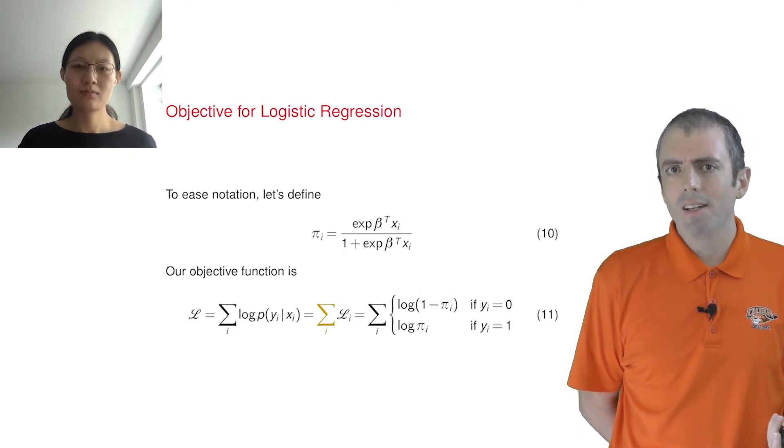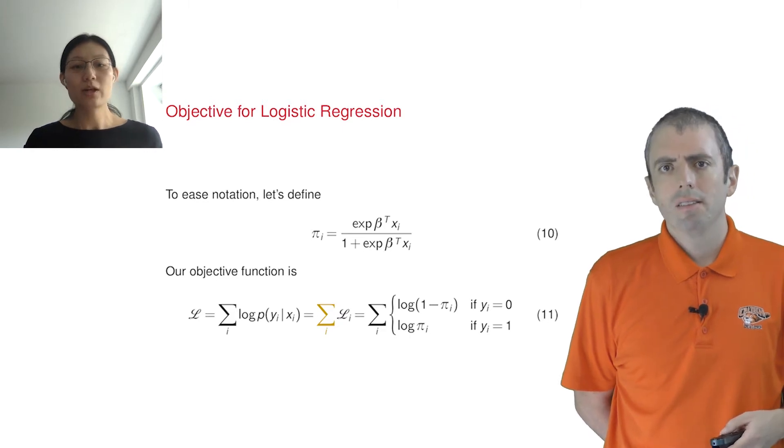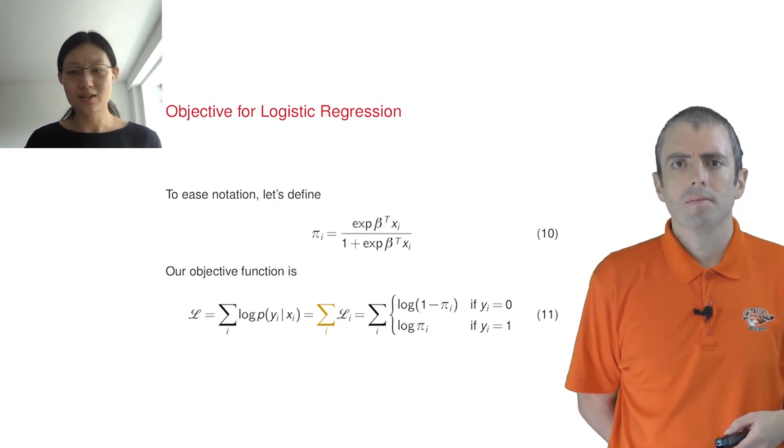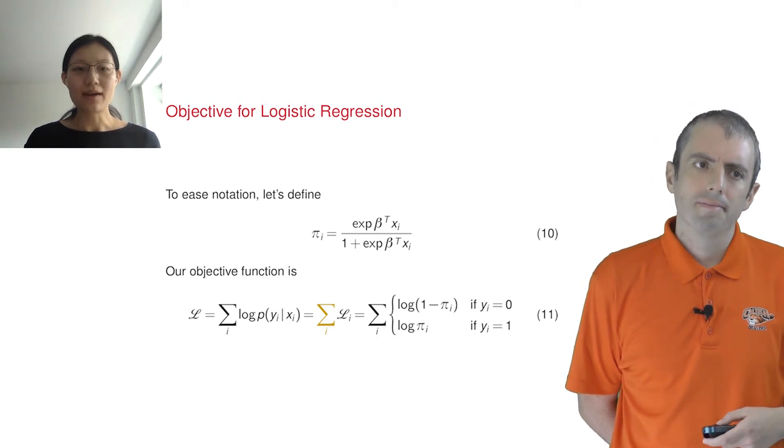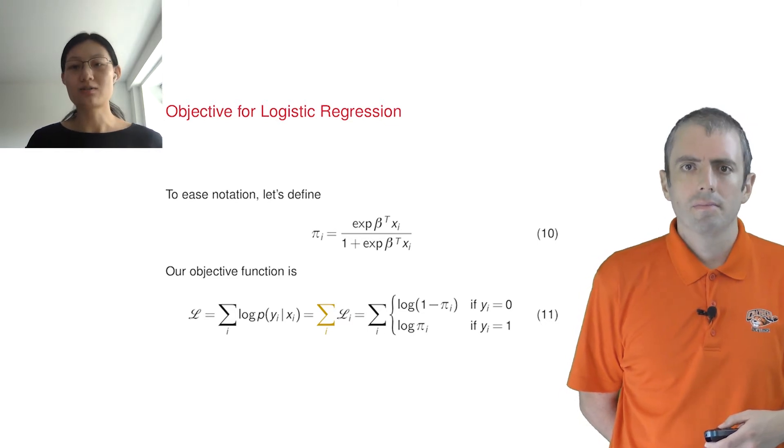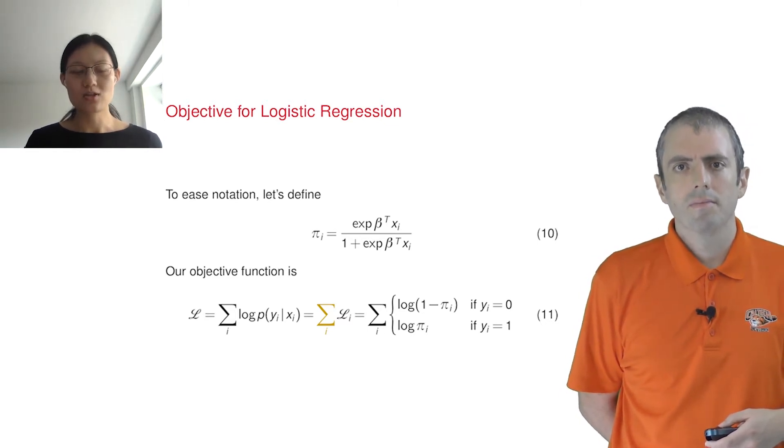But why is it okay to take the log in the first place? Remember that our goal is to find the parameters that give you the highest probability of the data. So it's like a ranking of all the models. The logarithm function is a monotonic function, so it doesn't change the overall ranking.